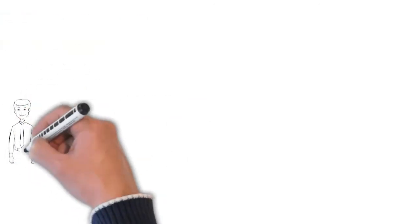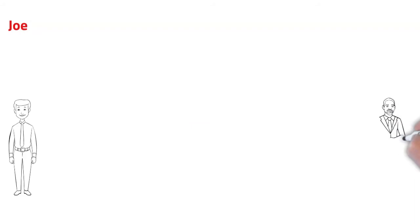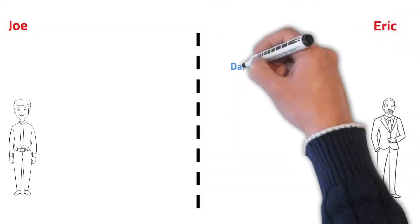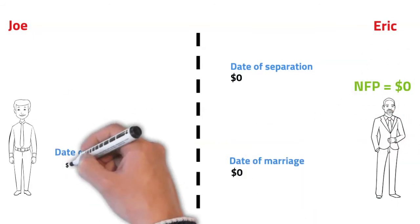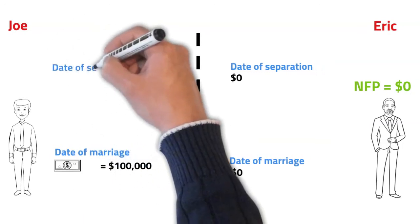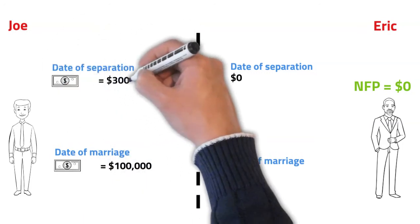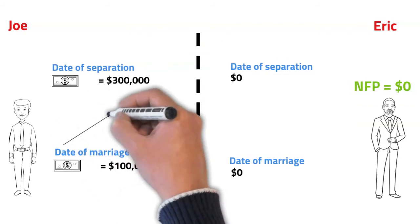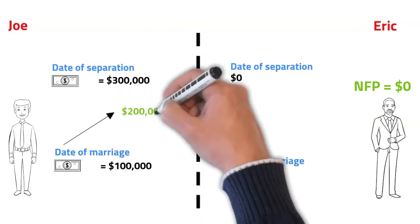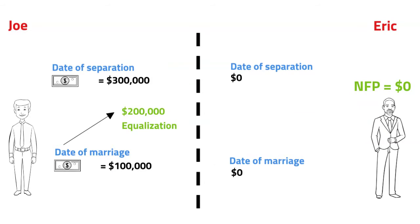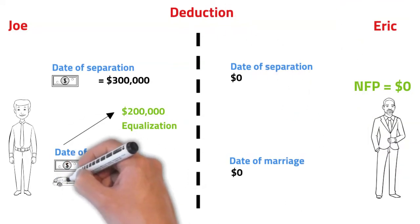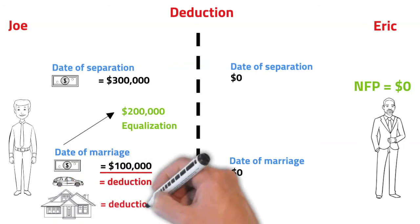We'll use Joe and Eric as examples. We'll assume that Eric was a stay-at-home parent and did not accumulate any assets of his own during the marriage, so his NFP will be zero. Joe had an RRSP worth $100,000 at the date of marriage, but by the time they separated, it had grown to $300,000. This means the assets increased in value by $200,000 during the marriage, and this is the only portion of the RRSP subject to equalization, because the initial $100,000 that existed on the date of marriage is being deducted. As a general rule, the more assets Joe owns on the date of marriage, the more money he'll save in the equalization process.